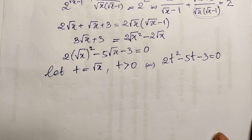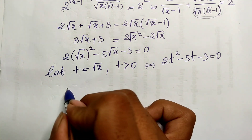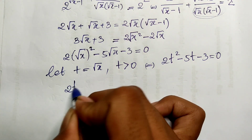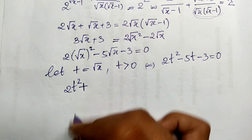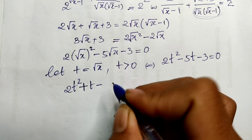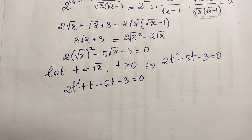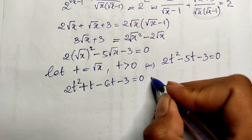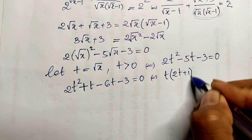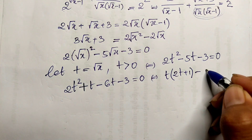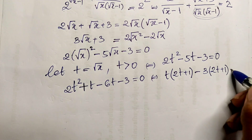We can factor this as: 2t squared plus t minus 6t minus 3 equals zero. Taking t out of the first two terms and 3 out of the last two terms, we get: t times (2t plus 1) minus 3 times (2t plus 1) equals zero.